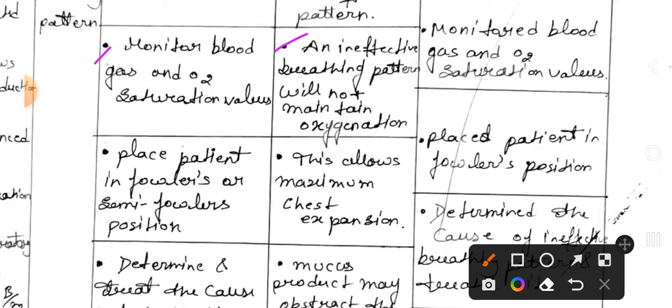Rational: ineffective breathing pattern will not maintain oxygenation. Implementation: monitor blood gas and O2 saturation values. Third intervention: place patient in Fowler's or semi-Fowler's position. Rational: this allows maximum chest expansion.